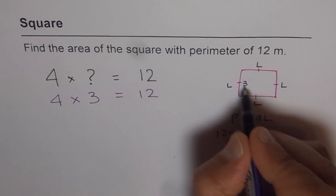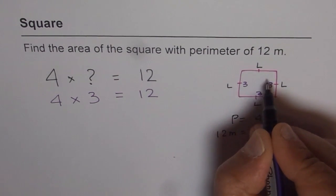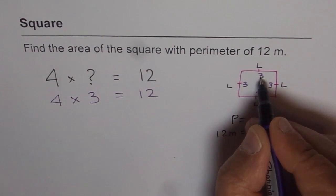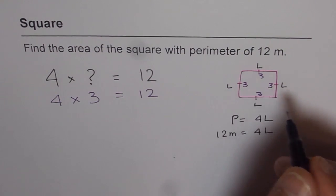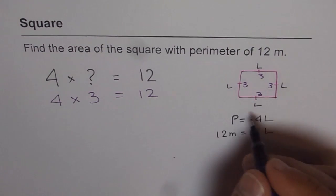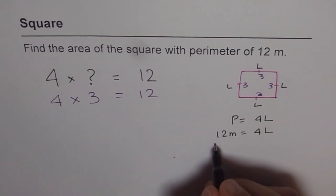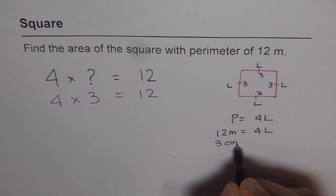4 times 3 is 12. That means the sides should be 3 each. Now, if you add 3 plus 3 is 6, 6 plus 3 is 9, and 9 plus 3 is 12. So that means the sides of your square should be 3 centimeters each.